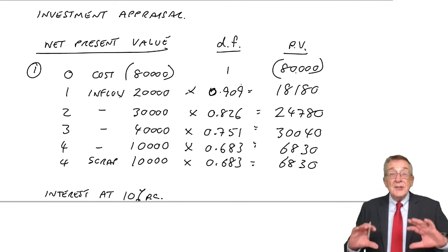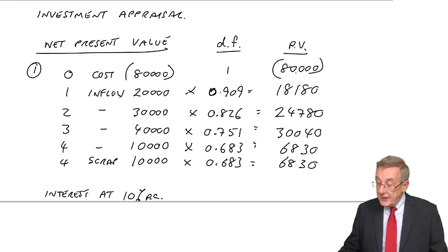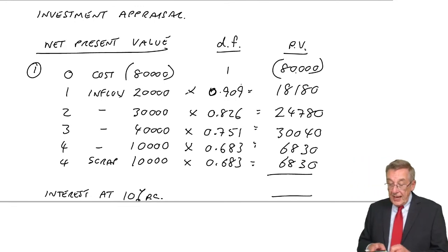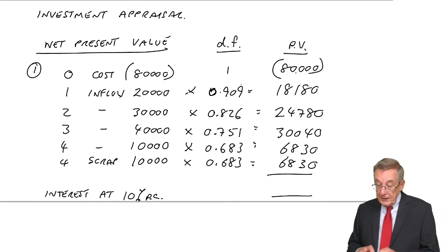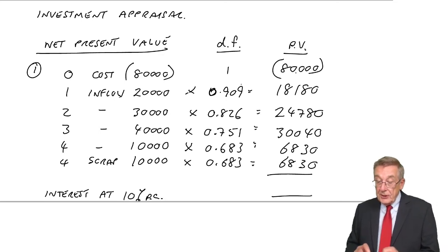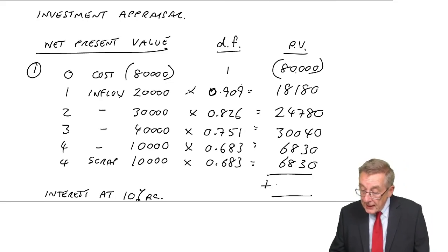Well, is there a net surplus or deficit? Add them up. The inflows, 18,180 plus 24,780 plus 30,040, 6,830, 6,830 minus the original 80,000 gives me plus 6,660.